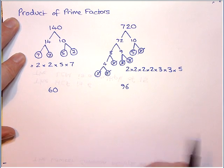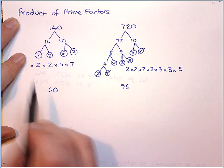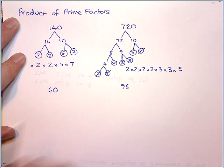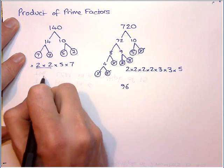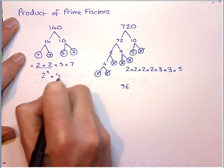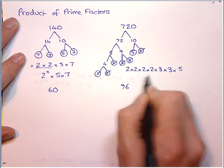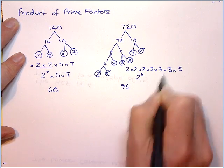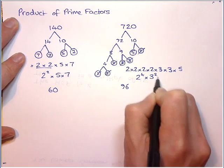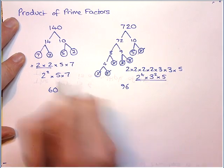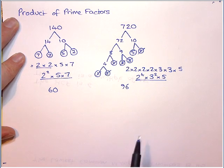Now they don't often do this anymore, but they can. They can say product of prime factors, but in index form. That means introduce indices. So here we can write this as 2 squared. And here we can introduce this as 1, 2, 3, 4. So it's 2 to the power of 4 times 3 squared times 5. So if it mentions index form, it simply means write using indices.